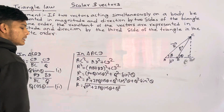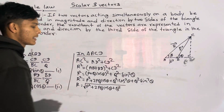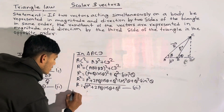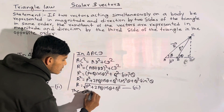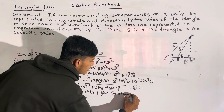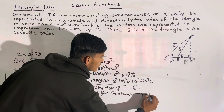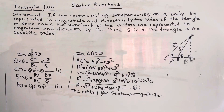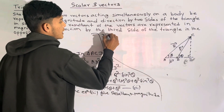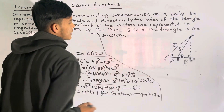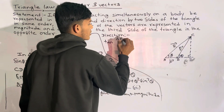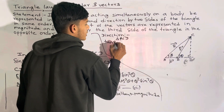So now we can find the resultant magnitude. Equation 3 gives the resultant magnitude. Now we can do the direction.